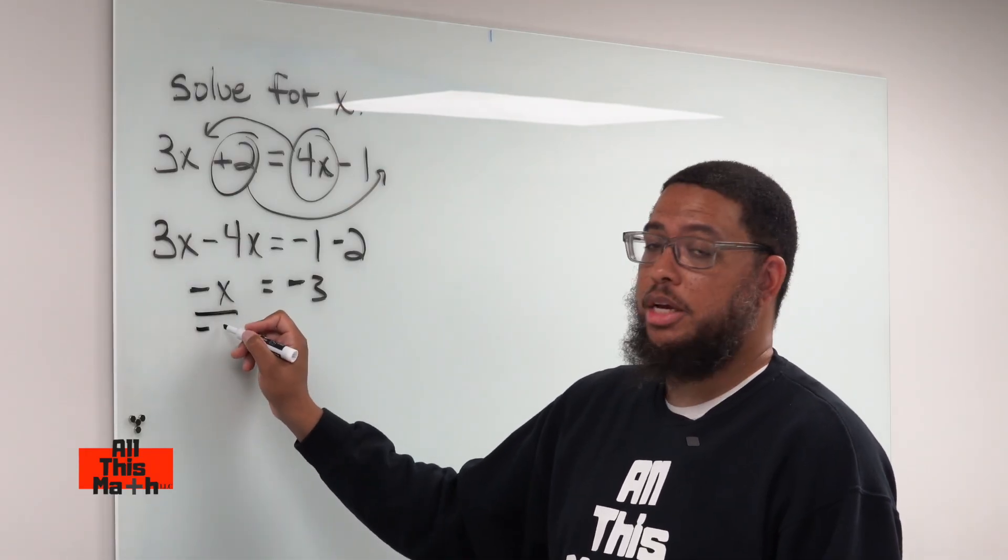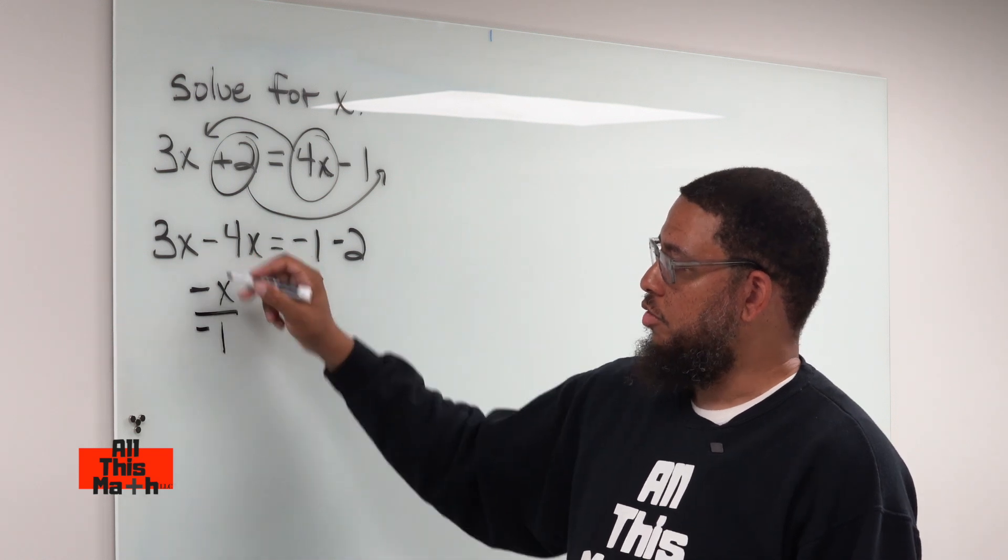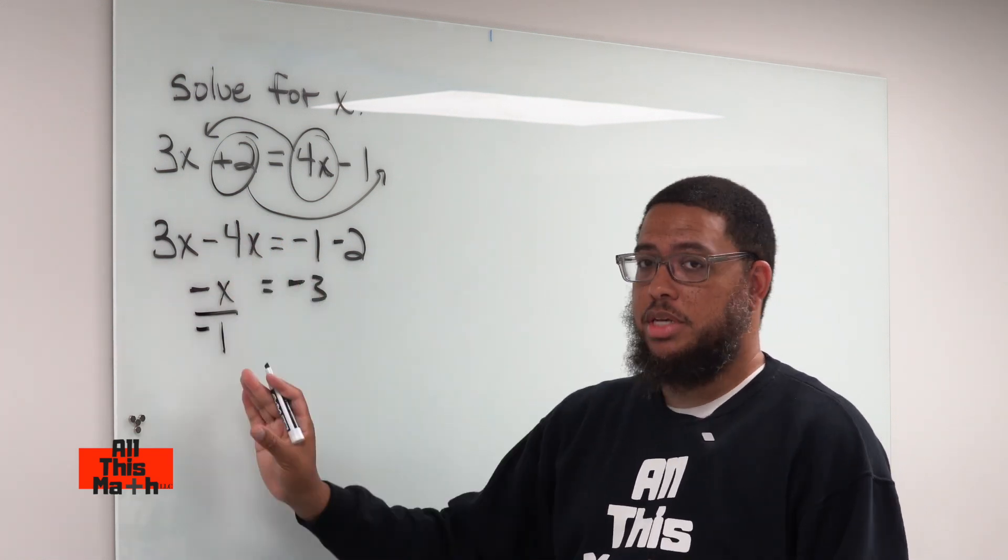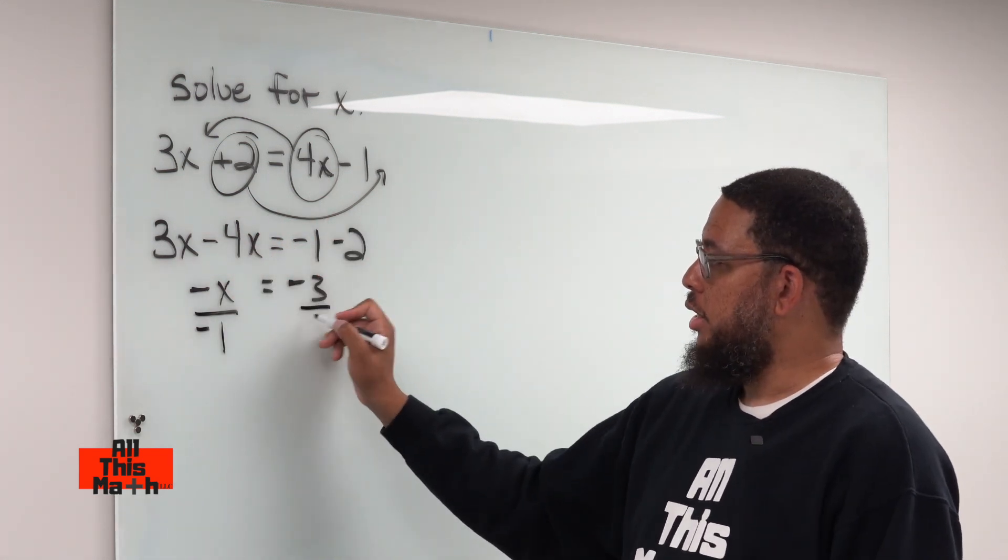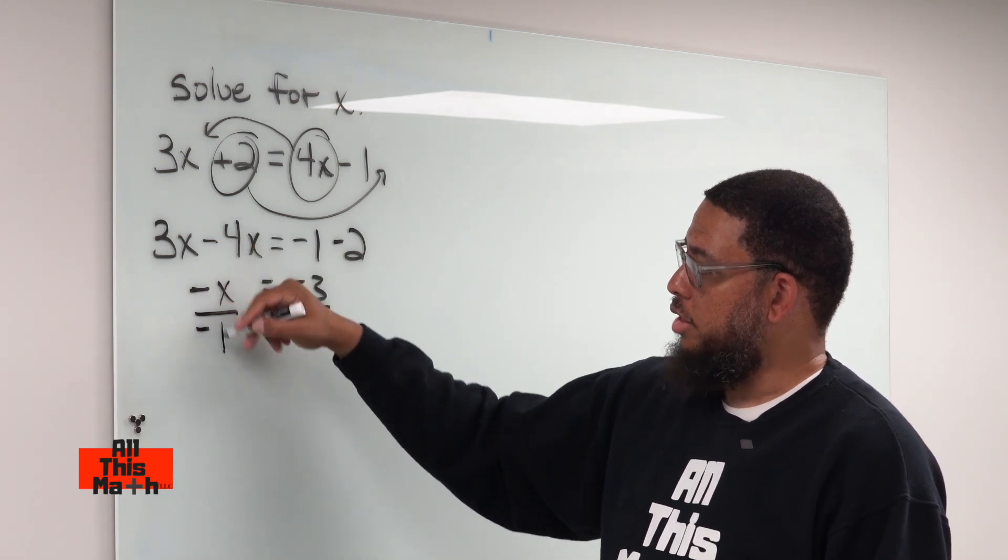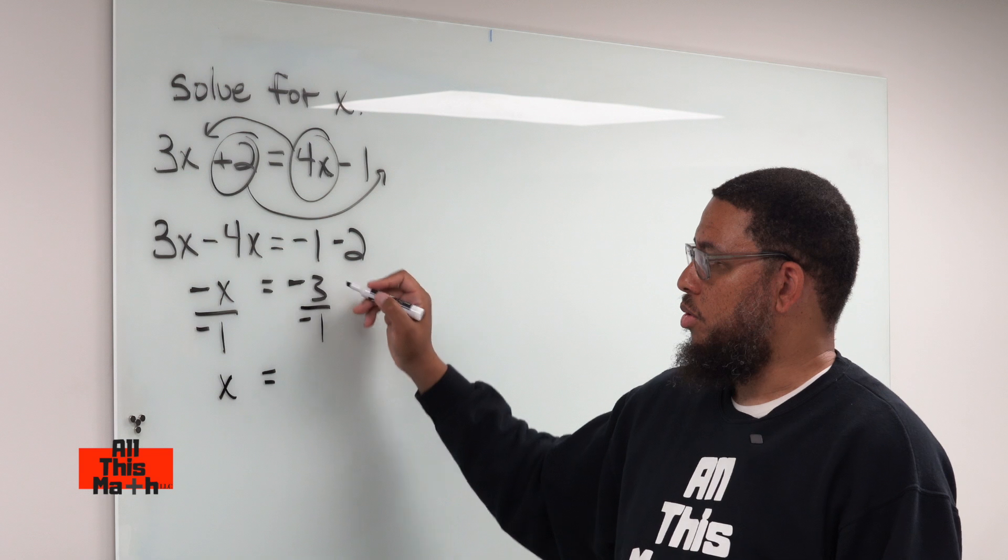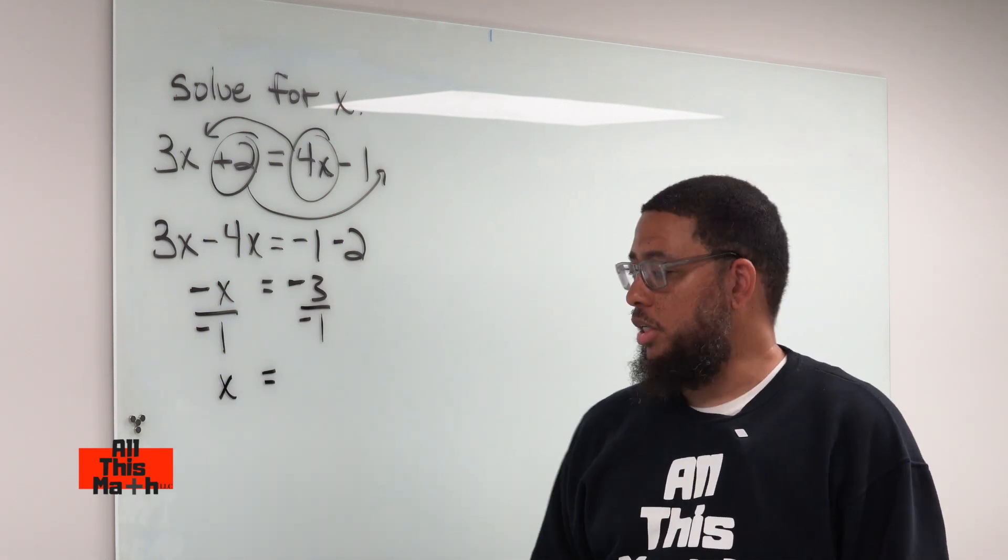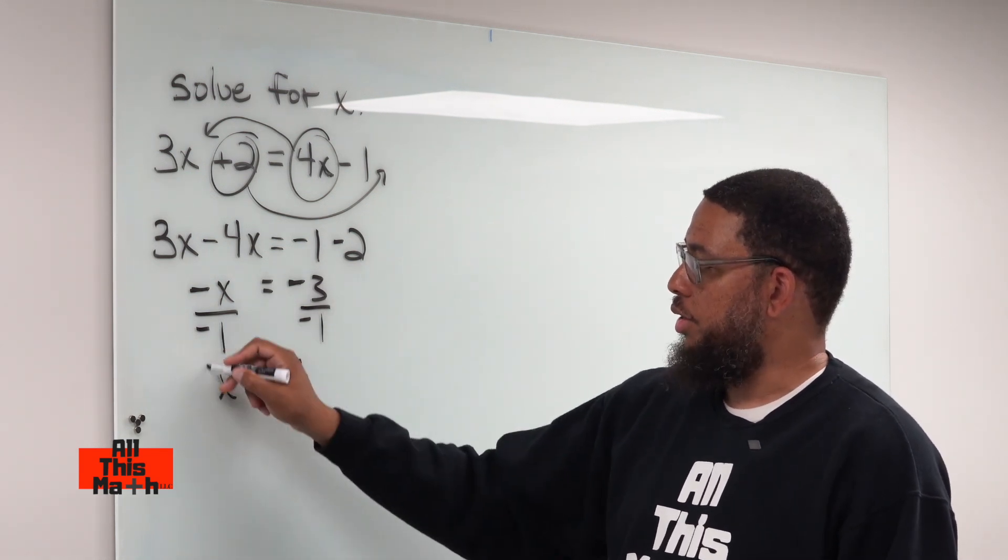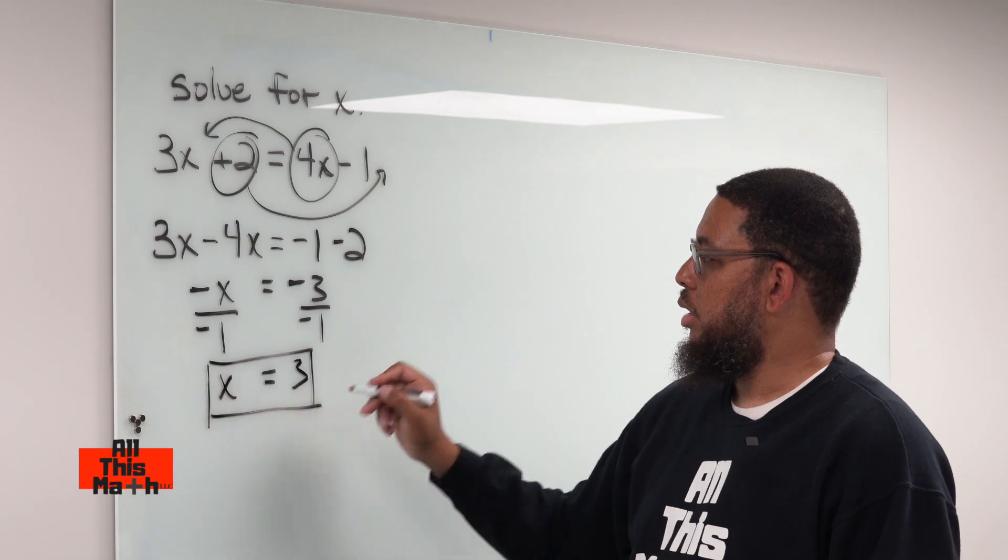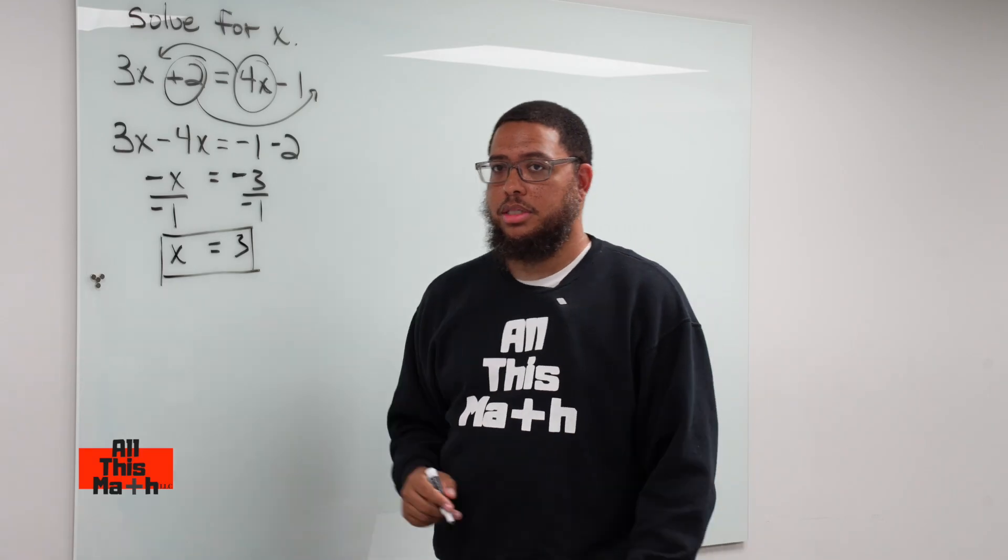Because when we want to get rid of something in algebra, we do the opposite operation. So we divide by negative 1, but if we do it on the left side, we also need to do it on the right side in order to keep everything balanced. So negative x divided by negative 1 leaves us with just positive x. And on the right side, negative 3 divided by negative 1 leaves us with positive 3. And that's our answer, and that's today's lesson.